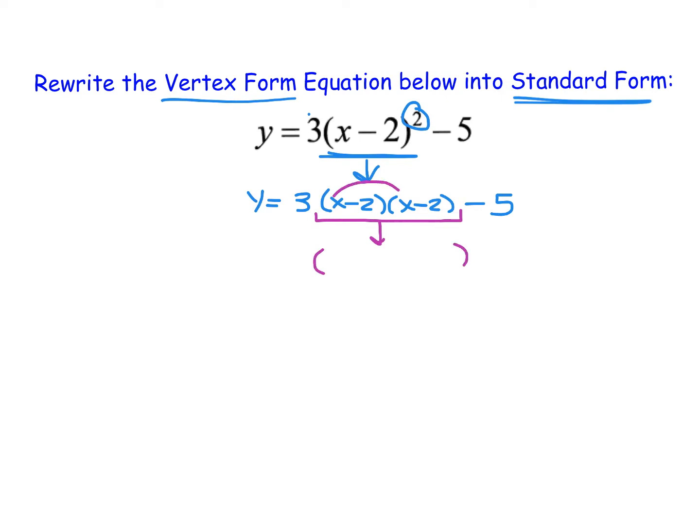So here if we take x times x, that becomes x squared. We then take x times negative 2, which is negative 2x. Negative 2 times x, which is negative 2x. And negative 2 times negative 2, which is a positive 4.